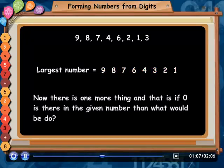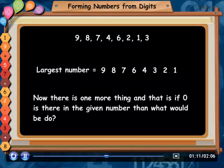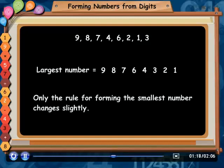Now, there is one more thing. If 0 is there in the given number, then what would we do? Only the rule for forming the smallest number changes slightly. To understand, let us take an example.